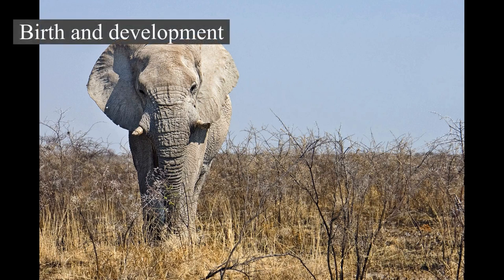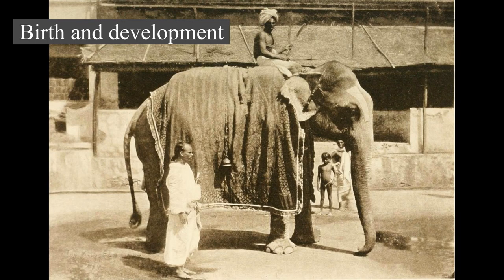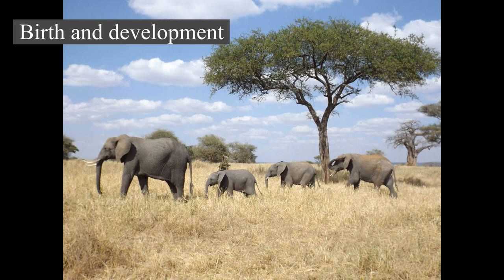Birth and development: Gestation in elephants typically lasts around 2 years, with inter-birth intervals usually lasting 4 to 5 years. Births tend to take place during the wet season. Calves are born 85 cm (33 in) tall and weigh around 120 kg (260 lb). Typically, only a single young is born, but twins sometimes occur. The relatively long pregnancy is maintained by 5 corpora lutea and gives the fetus more time to develop, particularly the brain and trunk. Newborn elephants are precocial and quickly stand and walk to follow their mother and family herd. A new calf is usually the center of attention for herd members — adults and most of the other young will gather around the newborn, touching and caressing it with their trunks.